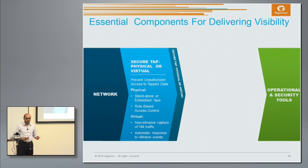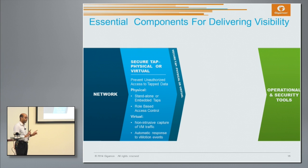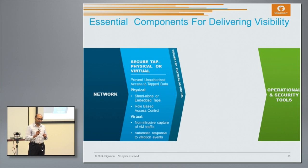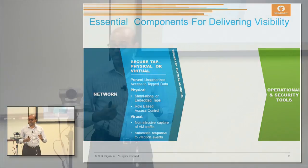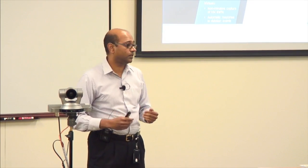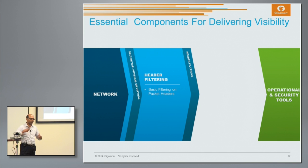Let me step through what I call a seven-stage chevron to talk about the various essential components of delivering visibility. First and foremost, you need the ability to get access to traffic irrespective of where it comes from — physical or virtual. It needs to be securely tapped with role-based access control to prevent unauthorized access. In a virtual environment, one of the key differences is that you're co-resident with the application, so you have to be very sensitive about being non-intrusive and must automatically respond to vMotion events.